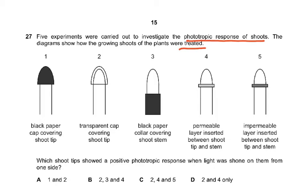This one is not receiving any light — it has been covered by the shoot tip. This one is receiving light, and this one is also receiving light. Then there is a permeable layer inserted between the shoots, so this will also receive light. But this one cannot, because the auxin produced here cannot diffuse down into the stem where it causes the phototropic response.